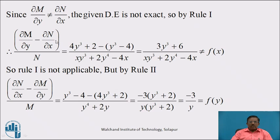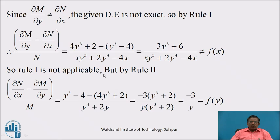By Rule 1, if we find (∂M/∂y - ∂N/∂x) / N, which equals (4y³ + 2 - (y³ - 4)) / (xy³ + 2y⁴ - 4x), which equals (3y³ + 6) / (xy³ + 2y⁴ - 4x). We will not get a function of x alone; therefore Rule 1 is not applicable.